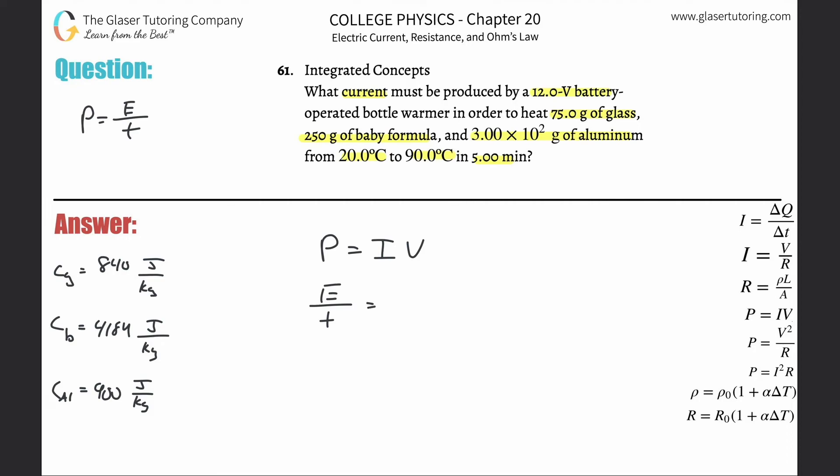So instead of writing power, I'm just going to write energy per time, that's equal to IV. Now I want to find the current, so I'm just going to solve this for I. Get it out of the way. Bring the V on down, cross multiply it, and now I'm going to reorganize it a little bit. Bring the I over to this side.